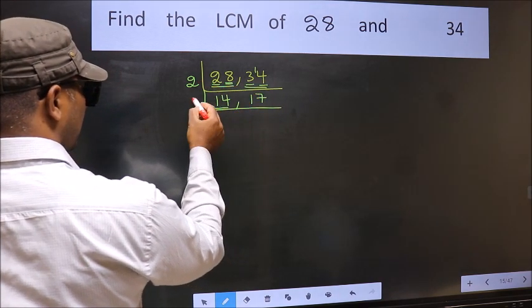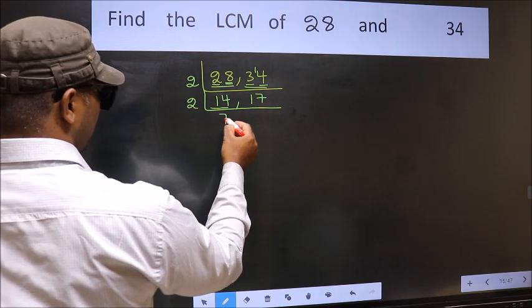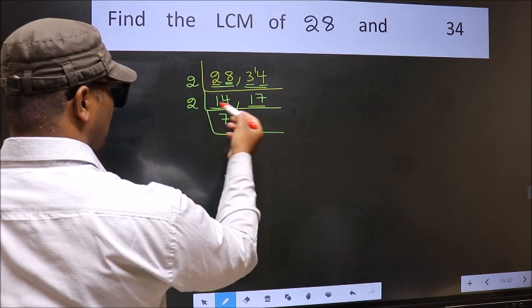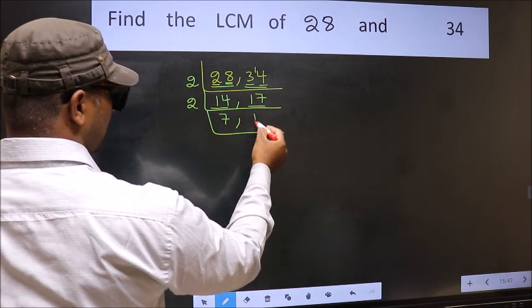Now here we have 14. 14 is 2 times 7 is 14. The other number 17, not divisible by 2, so we write it down as it is.